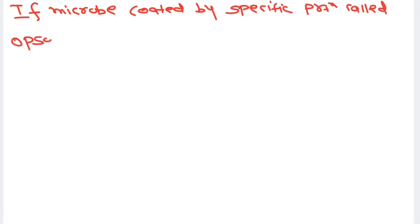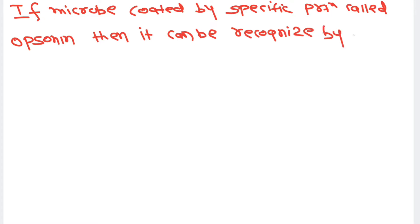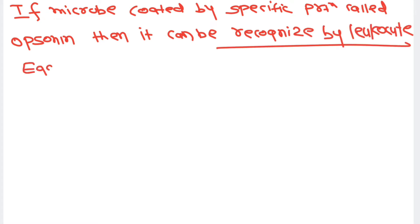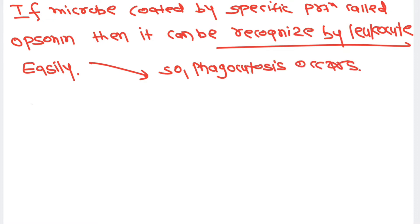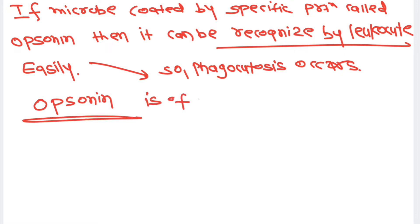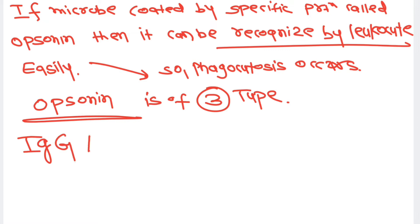It is very interesting that if a microbe is coated by a specific protein called opsonin, it can be easily recognized by the phagocytic cell. Phagocytosis will occur more easily if opsonization of the microbe occurs. There are basically three types of opsonin protein. The first is IgG antibody, which is recognized by the leukocyte via its Fc receptor.